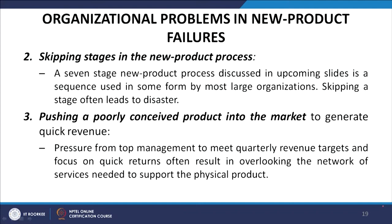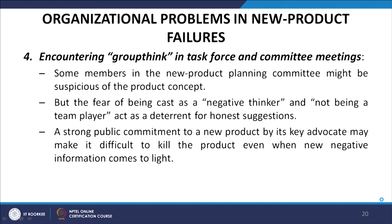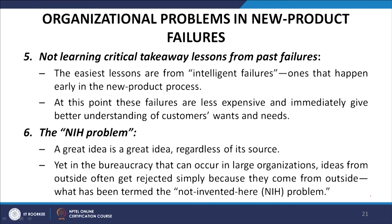The third reason is pushing a poorly conceived product into the market to generate quick revenues. Pressures from top management to meet quarterly revenue targets and a focus on quick returns often result in overlooking the network of supplementary services needed to support the physical product. The fourth reason is encountering groupthink in task force and committee meetings. Some members may be suspicious of the product concept, but fear of being cast as a negative thinker deters honest suggestions, and strong public commitment to a product makes it difficult to kill even when new negative information comes to light.